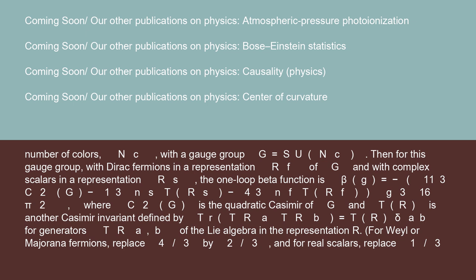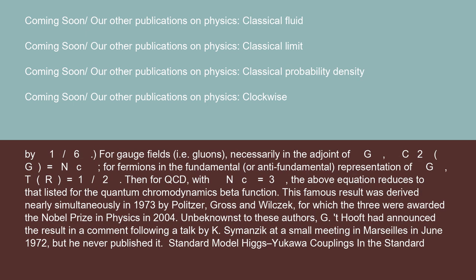For generators T^r_A in the representation r. For Weyl or Majorana fermions, replace 4/3 by 2/3, and for real scalars, replace 1/3 by 1/6.